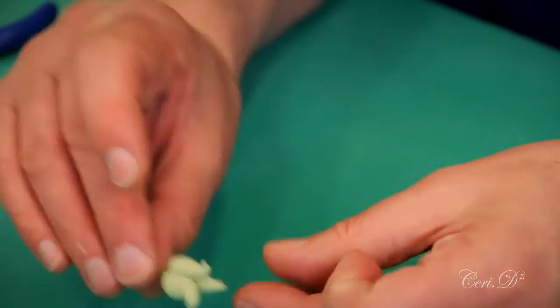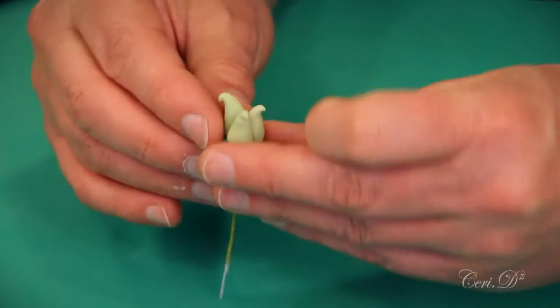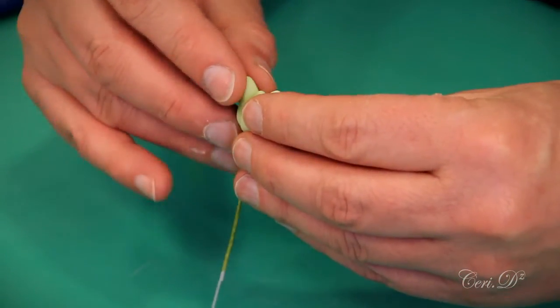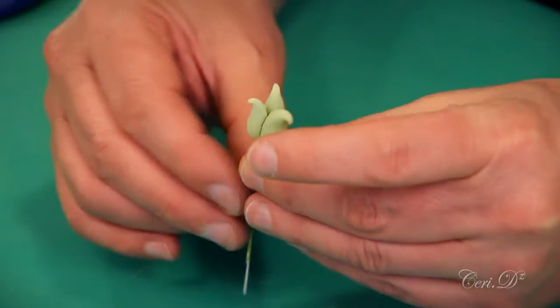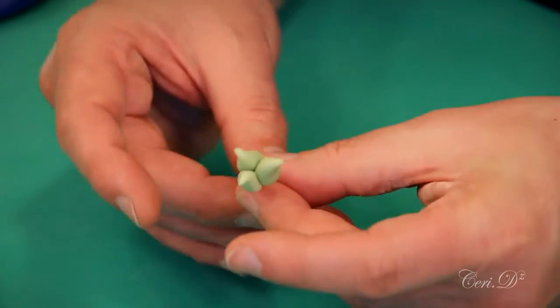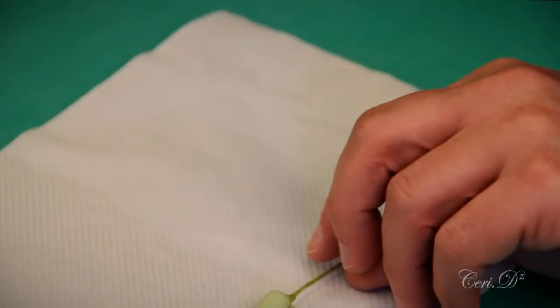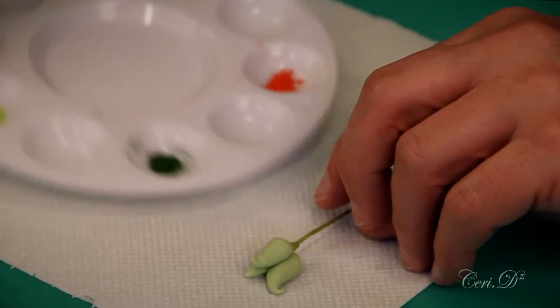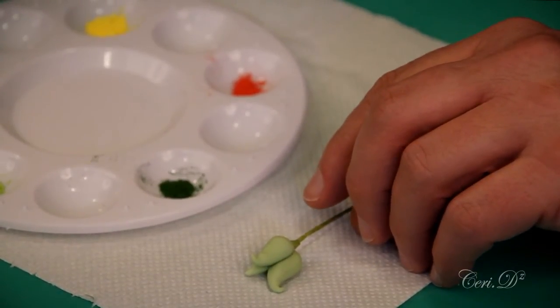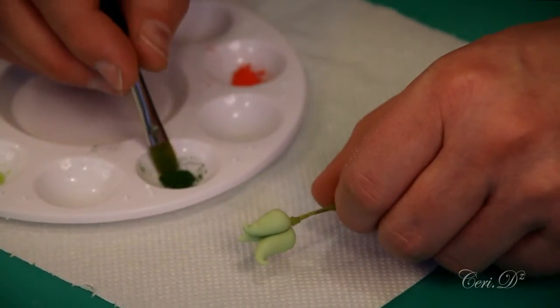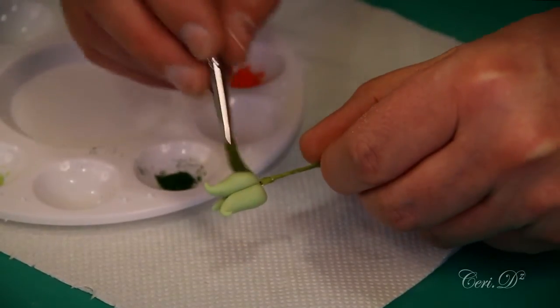So you're looking for something like that. Just make sure they're nice and securely together and that they have got three different angles to them. The next thing you need to do with that before you put it to dry is just get yourself a little bit of dust color. I find putting my dust colors in a palette a lot easier for me, but again that's personal taste. I'm just going to use a bit of green dust. This is actually foliage green just to give the base a bit of shading.